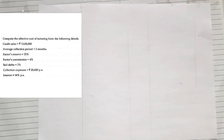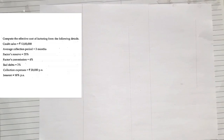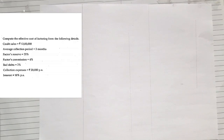Let us see the very first type of sum under factoring. The question reads: compute the effective cost of factoring from the following details. They are giving you credit sales, average collection period, factor reserves, factor commission, bad debts, collection expense, and interest.